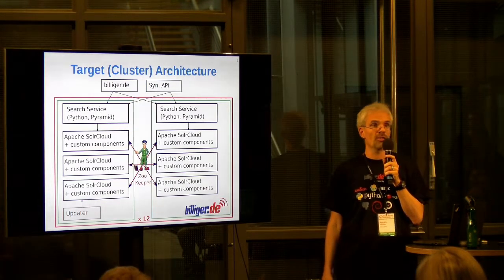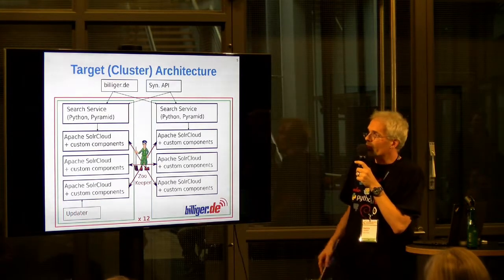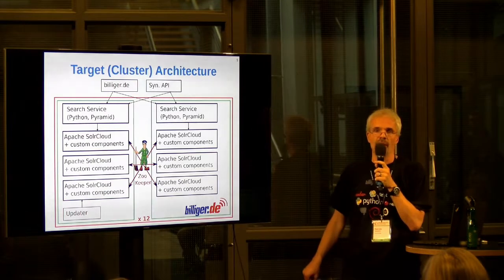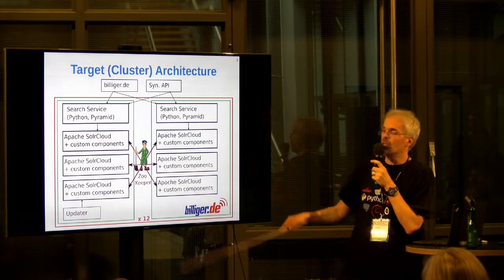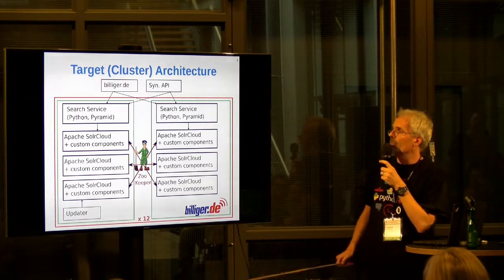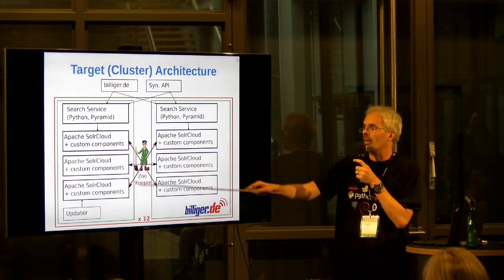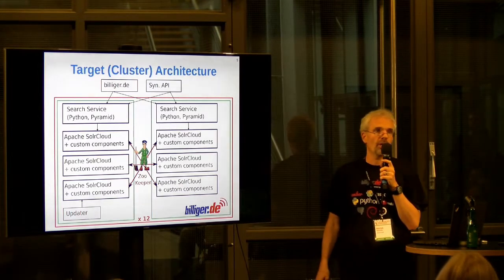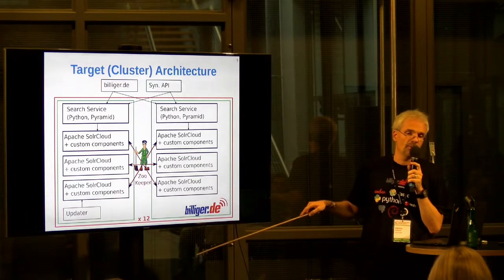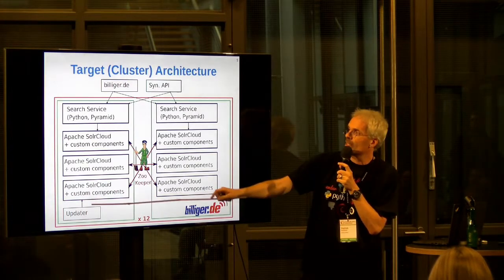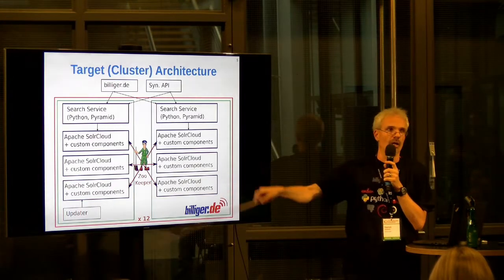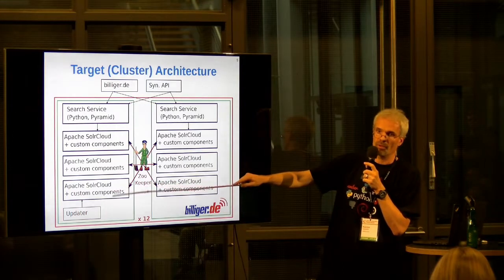Each of those six instances holds one-sixth of the index. To make this work, we have Apache Zookeeper — a distributed configuration management tool originally from the Hadoop ecosystem. It's capable of providing distributed transactions over these nodes, coordinating not just configuration distribution but also updates. There's only one updater on one machine; the other doesn't need one because all updates are fed into the cloud, and SolrCloud in conjunction with Zookeeper ensures all documents end up in the right shard — the Solr term for one-sixth of an index.